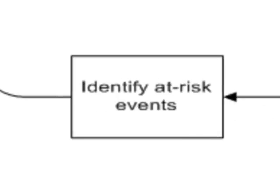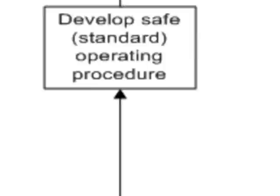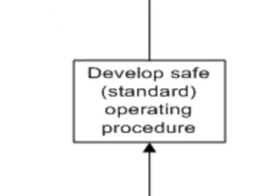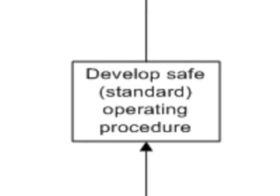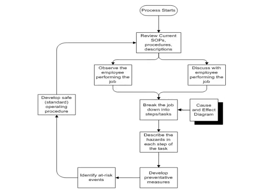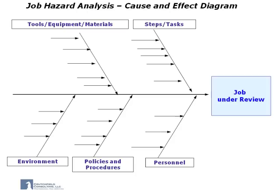We can then go back and identify any at-risk events that may be occurring. At that point, we redevelop the standard operating procedures, and the process will continue until as much of the risk and hazards of the task are removed. The cause and effect diagram, or Ishikawa diagram, is also known as the fishbone. It is a deceptively simple yet powerful tool that can be used in developing the job hazard analysis. It provides us with a graphic presentation of all the causes required to create an effect.